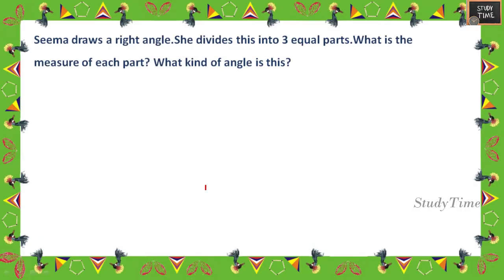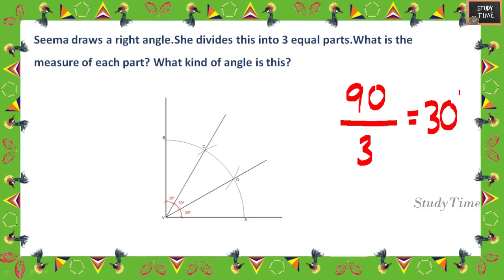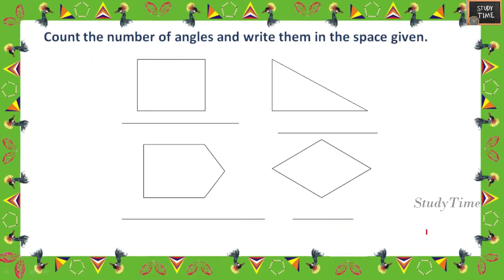Seema draws a right angle and divides it into three equal parts. What is the measure of each part, and what kind of angle is it? A right angle is 90 degrees. 90 ÷ 3 = 30 degrees. So each part measures 30 degrees, and a 30-degree angle is an acute angle. Read the question properly and write the answer that is asked.